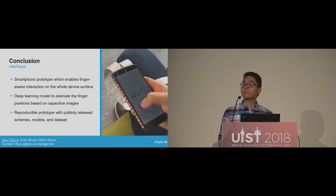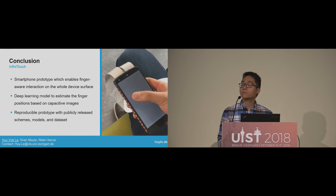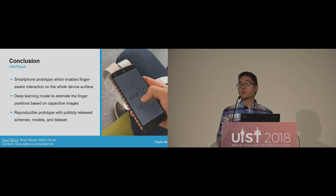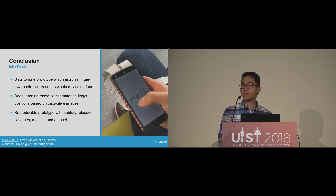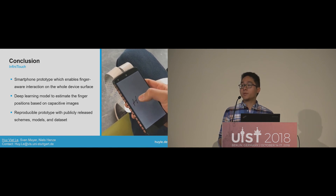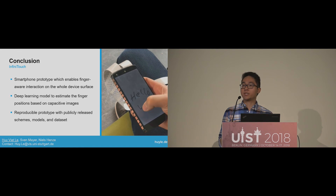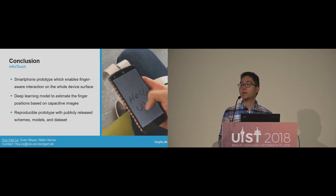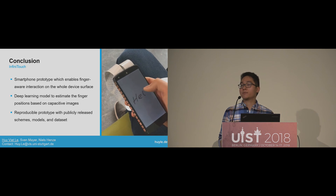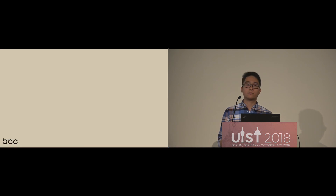Jamin from Seoul National University asked about power consumption when running the model on mobile devices. The speaker explained that the prototype contains three separate devices — two Nexus 5 devices and an Arduino — each operated by different batteries. If developed by a smartphone manufacturer, everything that would be added is a flexible PCB or some additional sensor for back-side sensing, and battery consumption depends on which sensor is used. In their case, battery runtime is the same or slightly lower than a normal Nexus 5 device.